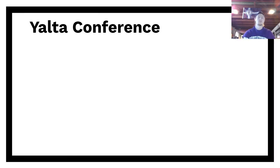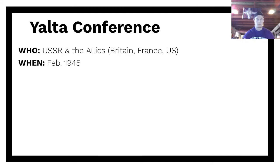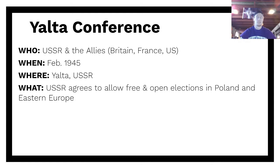First, we need to look at a couple of conferences. The first one is the Yalta Conference, between the Soviet Union and the Allies. The Allies are Britain, France, and the United States, and it takes place in February of 1945 — before the end of the war. It takes place in Yalta, in the Soviet Union. The key outcome is that the Soviet Union agrees to allow free and open elections in Poland and Eastern Europe.